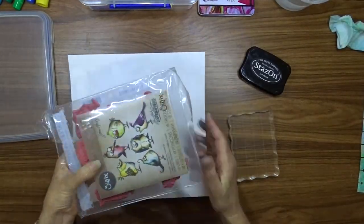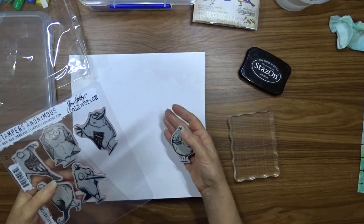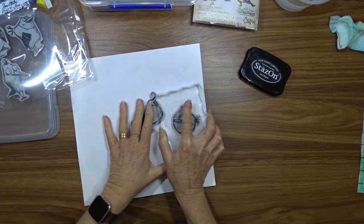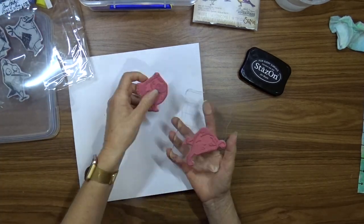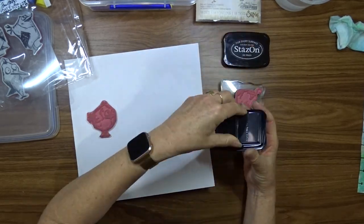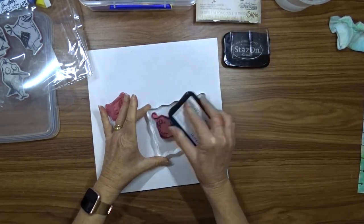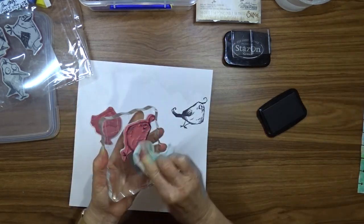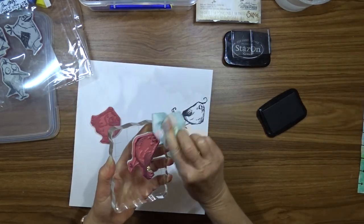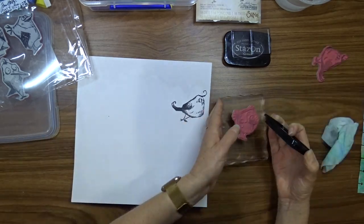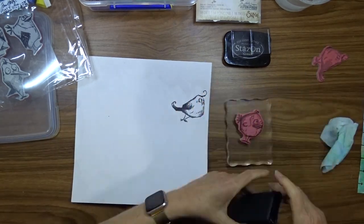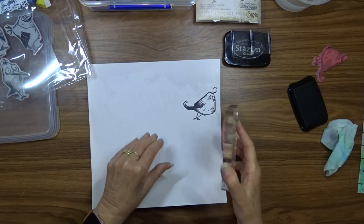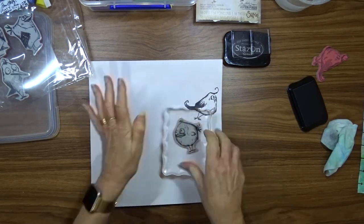Part of my focal point is going to be a couple of birds from this Tim Holtz Crazy Birds stamp set. I'm going to stamp two of them onto a piece of cardstock that I have given a coat of gesso, and I'm going to use my Stazon Jet Black ink to do that because when I color it I'm going to use some Distress Inks and I don't want my outline to smudge.